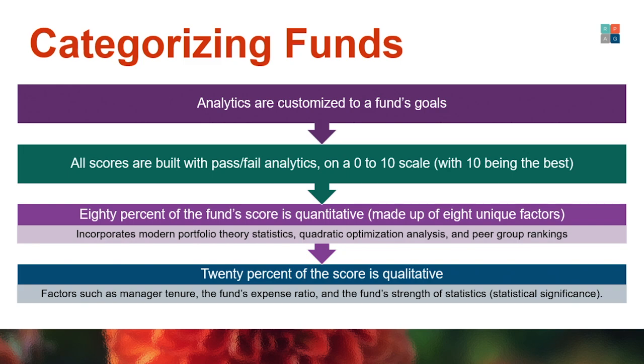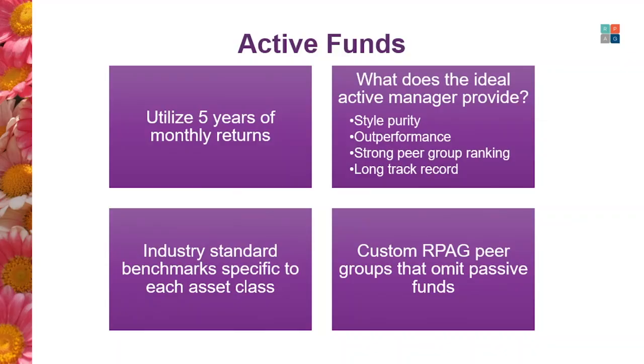The quantitative side looks at things like returns-based style analysis, quadratic optimization, and peer group analysis. The qualitative or quality factors consider things like manager tenure, fund expenses, and strength of statistics. For active funds, RPAG requires five years of monthly returns to score in our system. We've picked five years because we're able to analyze a manager's performance over an entire market cycle, and those 60 data points allow us to say that each observation within the scorecard is statistically significant.